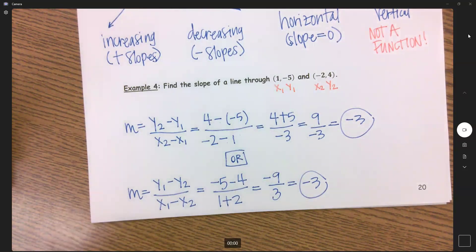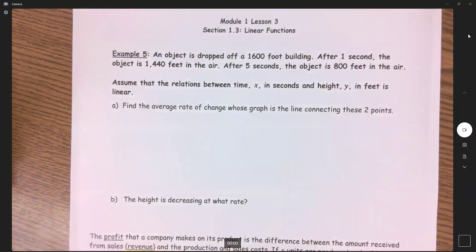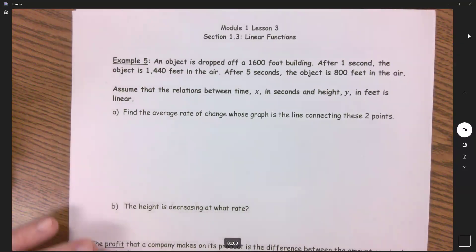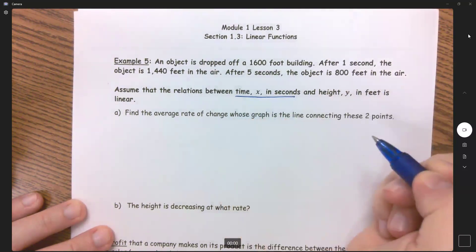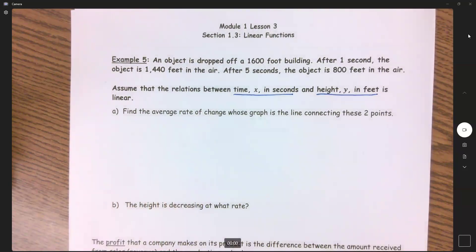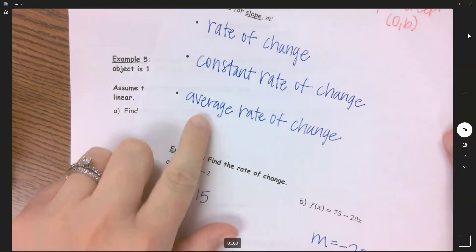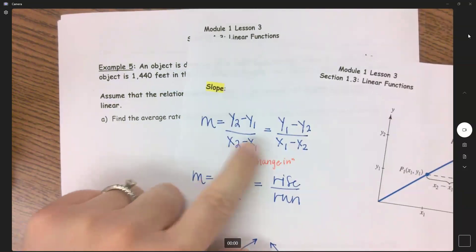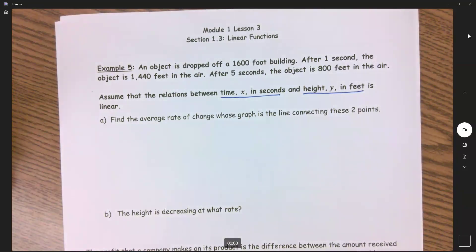Okay, I think I want to go to the next one. Yes, go to the next page. Example 5 here. An object is dropped off of a thousand foot building. After one second the object is 1,440 feet in the air. After five seconds the object is 800 feet in the air. Assume that the relationship between time x in seconds and height y in feet is linear. So they're telling me how to write these ordered pairs here. They say time x in seconds and then my height y in feet. So if they want us to find the average rate of change that should send a light bulb off in your head. The average rate of change is the same as slope.